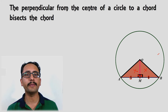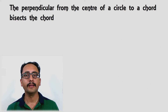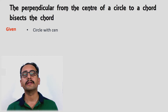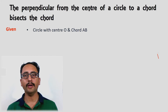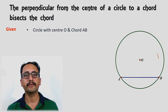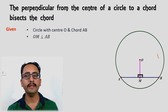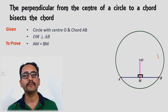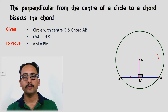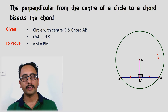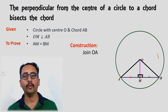Let's start with the step-by-step proof. What is given to us: we are given a circle with center O, chord AB, and OM is perpendicular to AB. What we have to prove is that AM equals BM. For construction, we will join OA and OB.